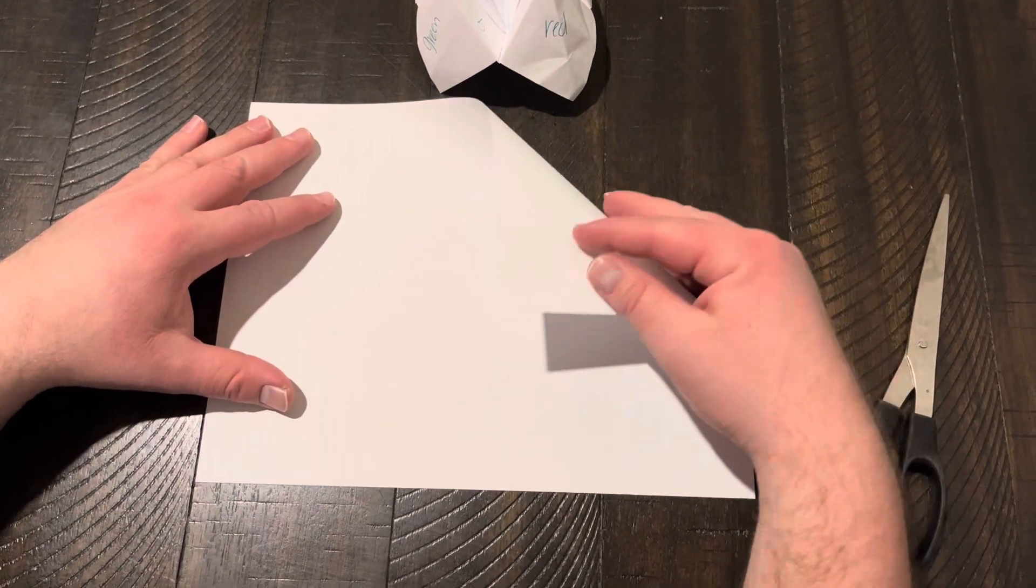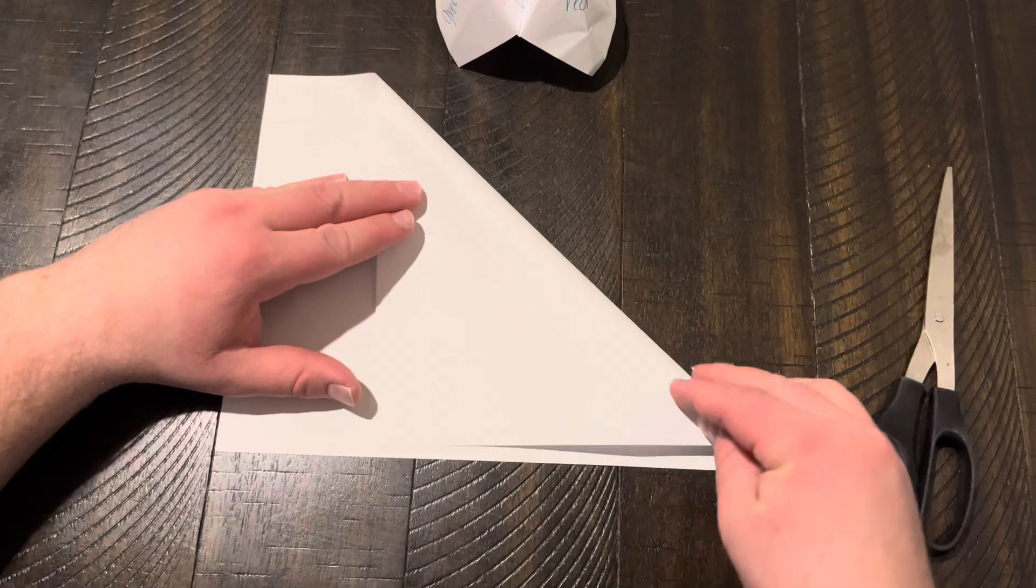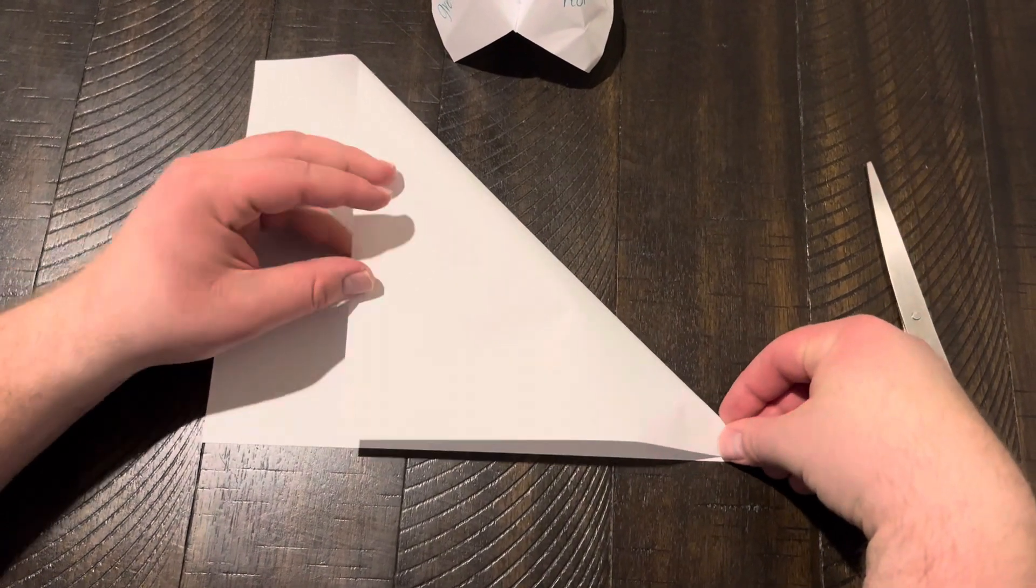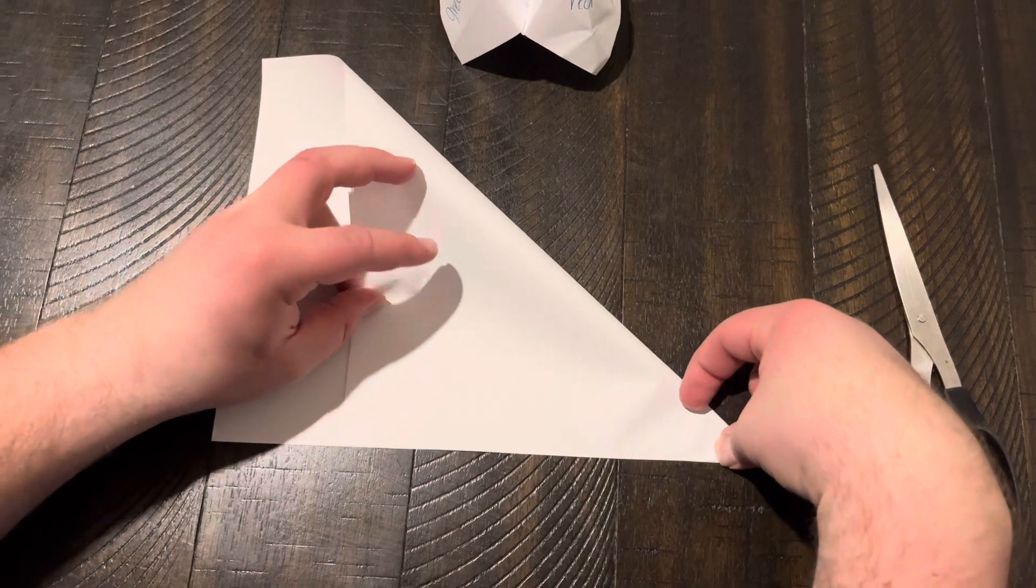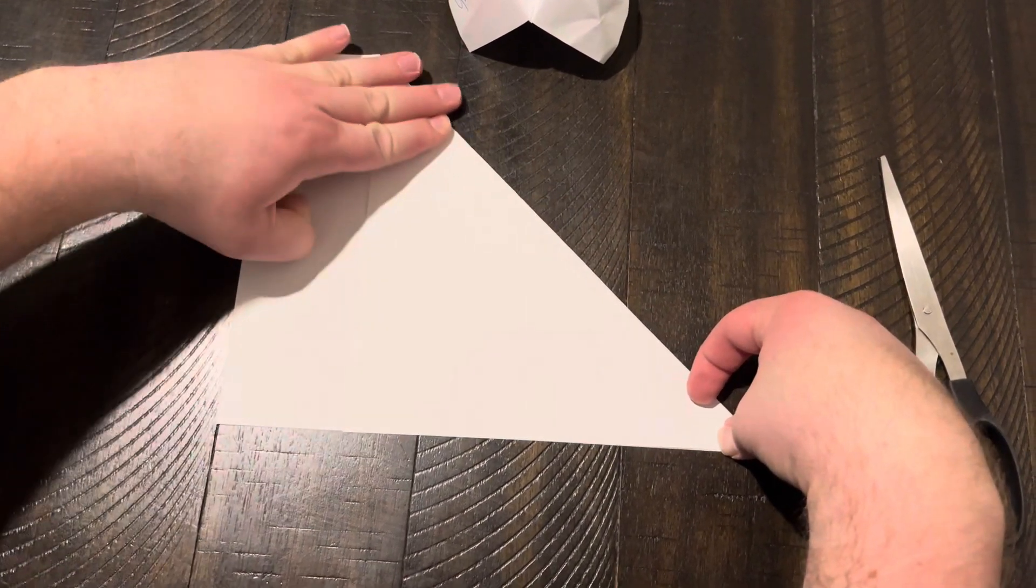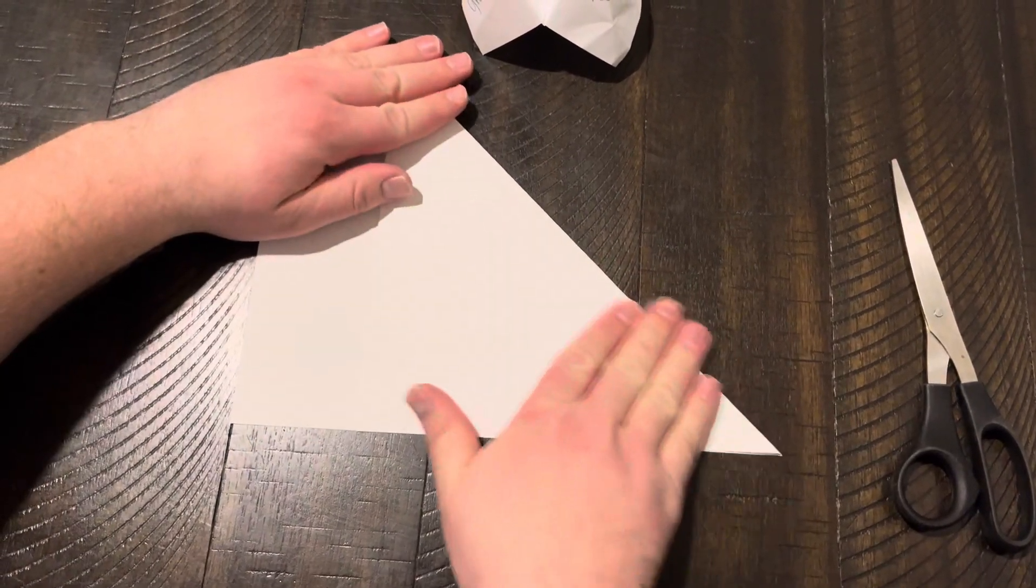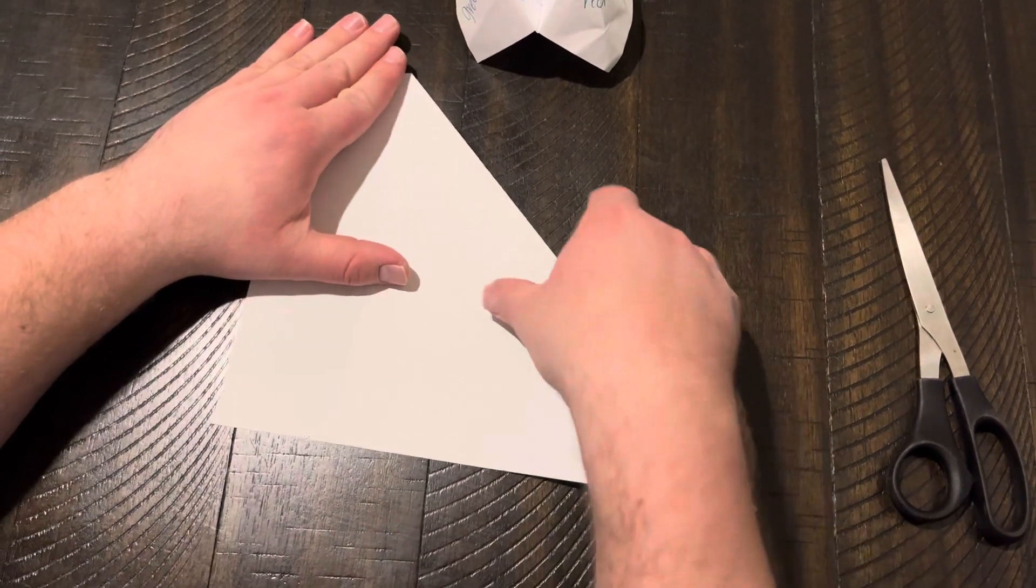You can do that by taking one corner, going all the way down from this corner along the edge like so. Crease it nice and good, so the edge is lined up.